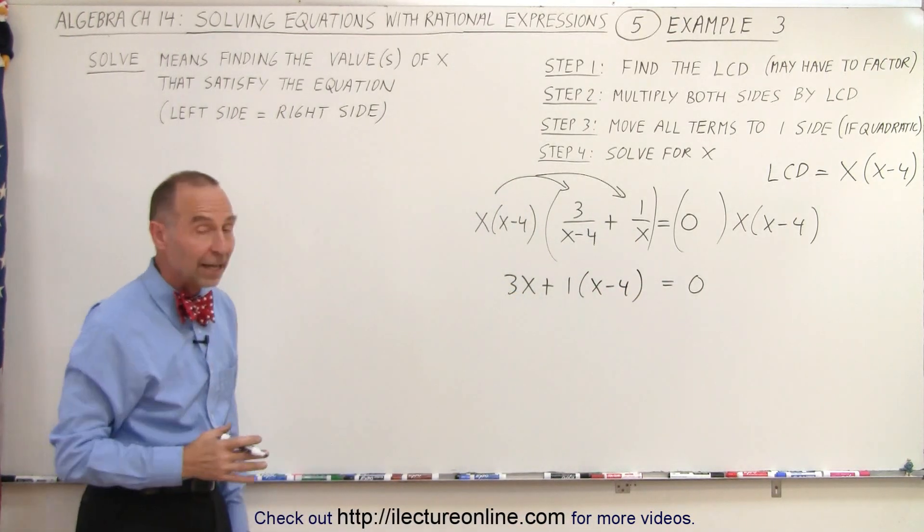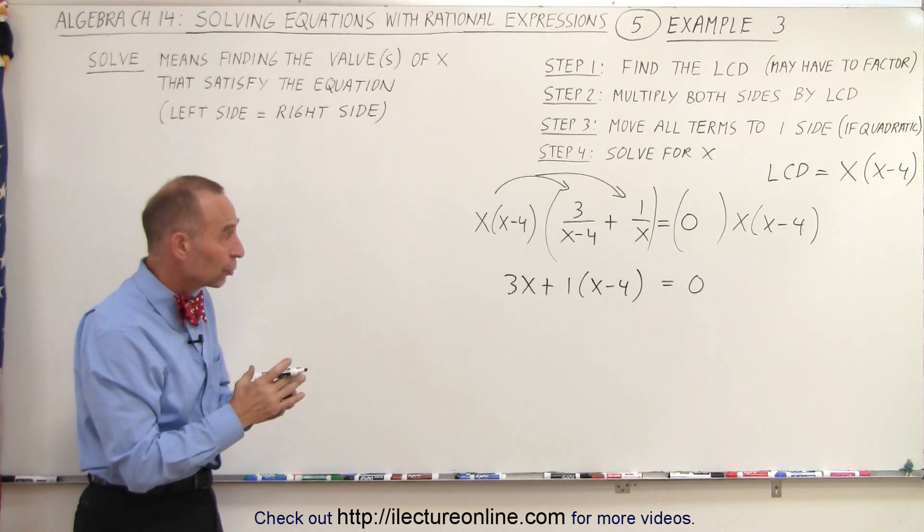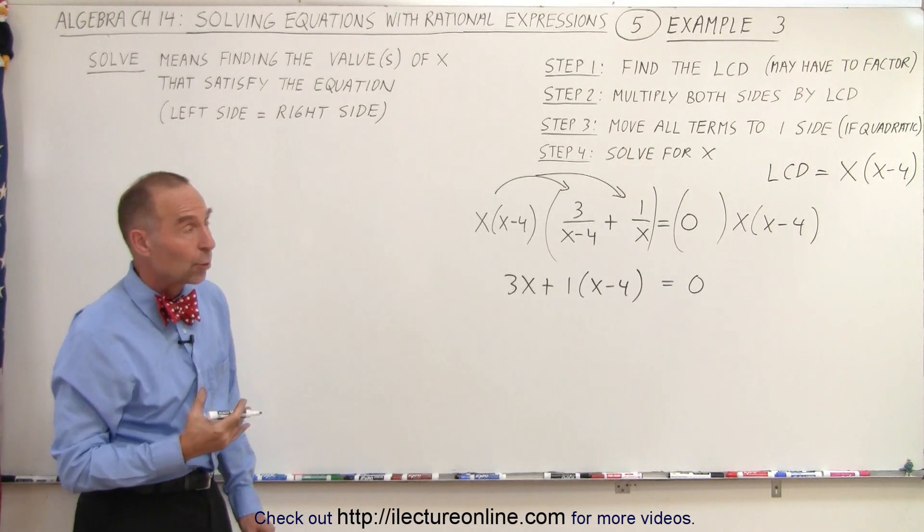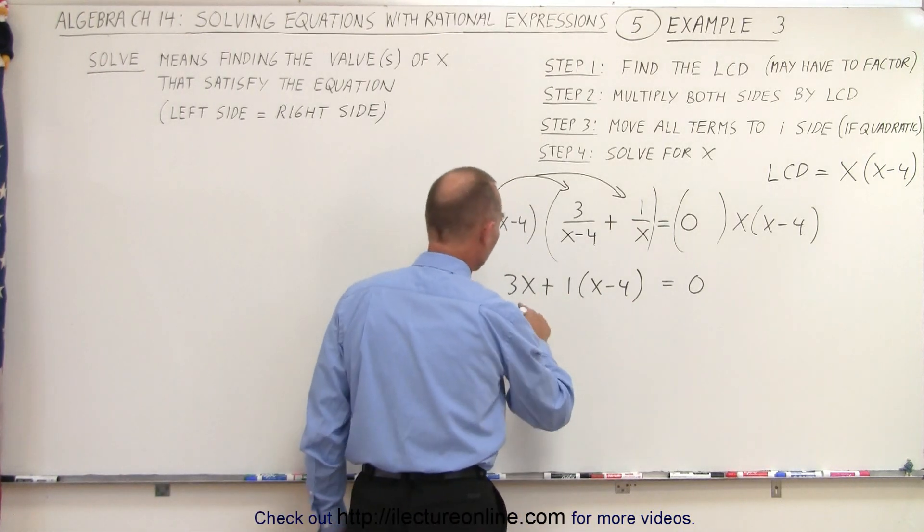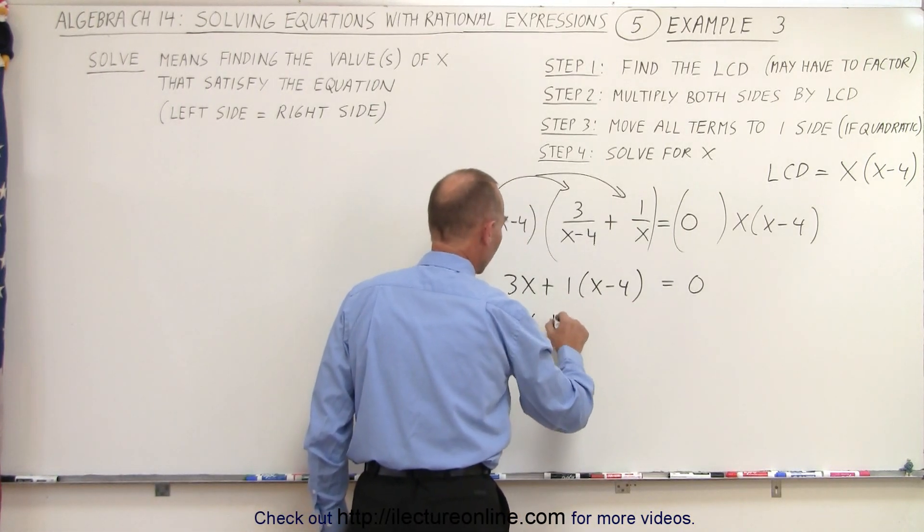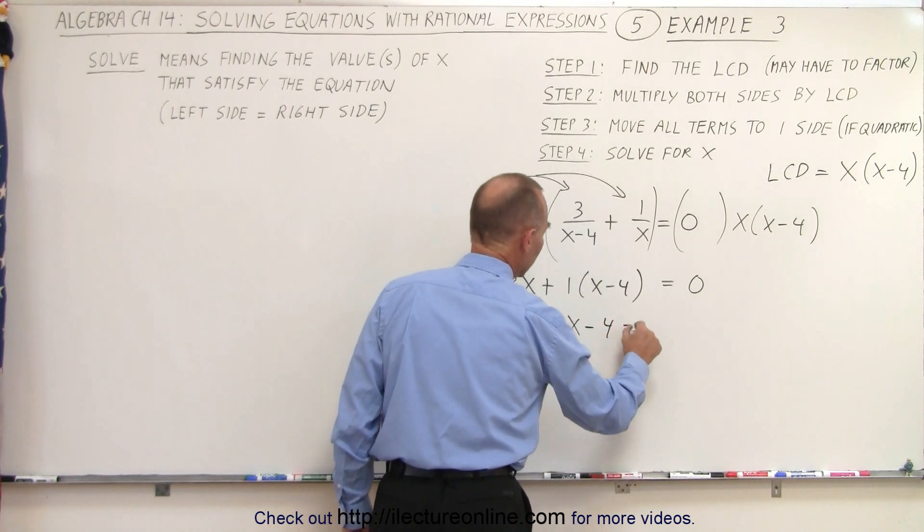And now we have to just multiply everything out, get rid of the parentheses, collect common terms. It's not a quadratic equation, so we don't have to move all the terms over to one side. So this becomes 3x plus x minus 4 equals 0.